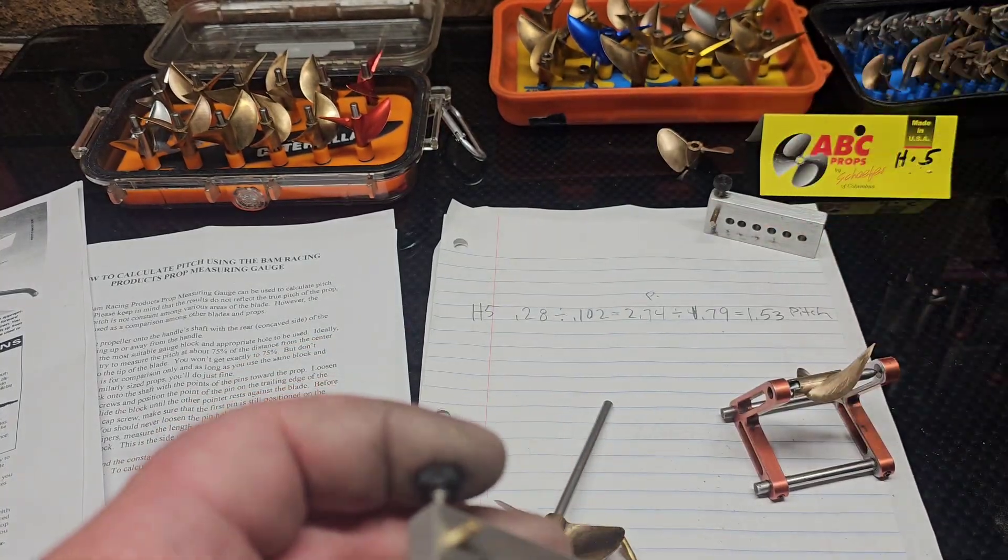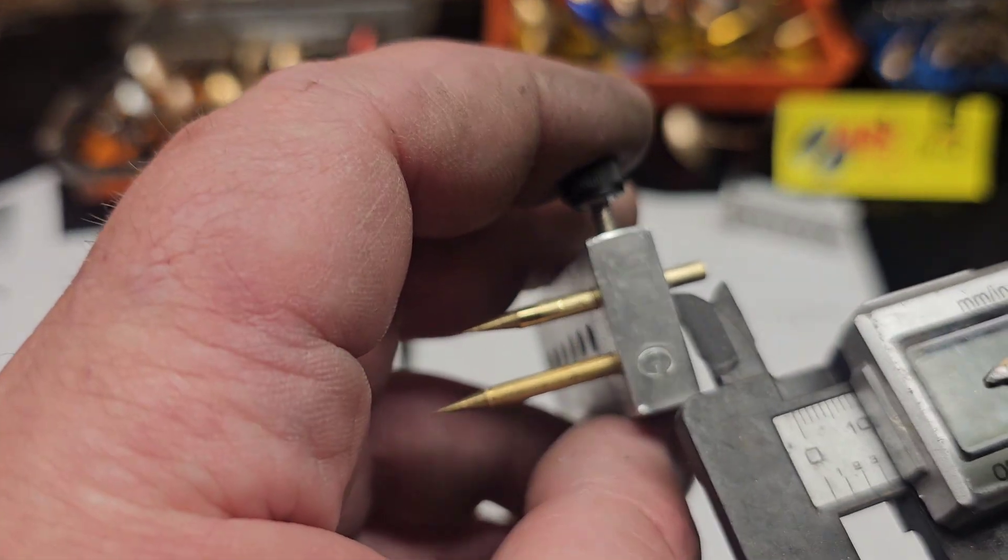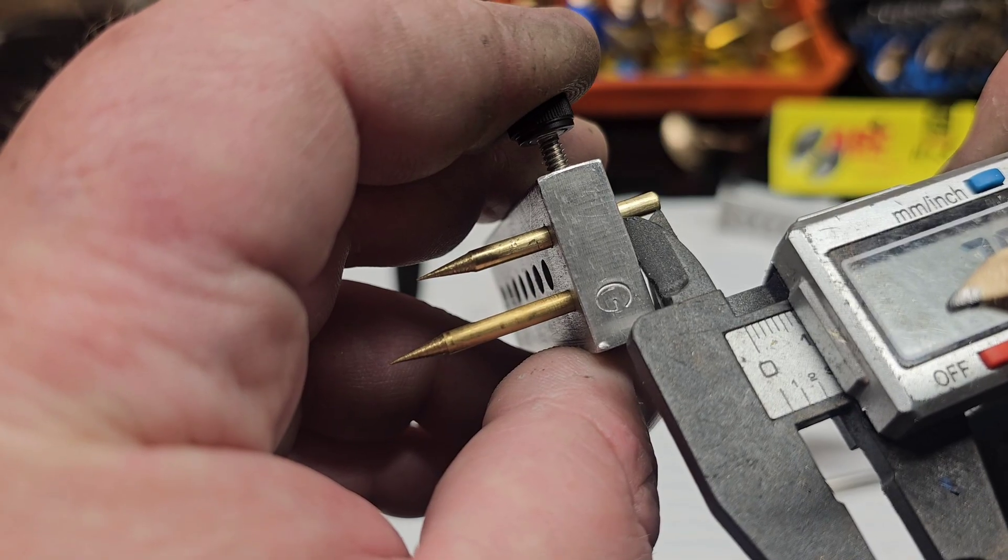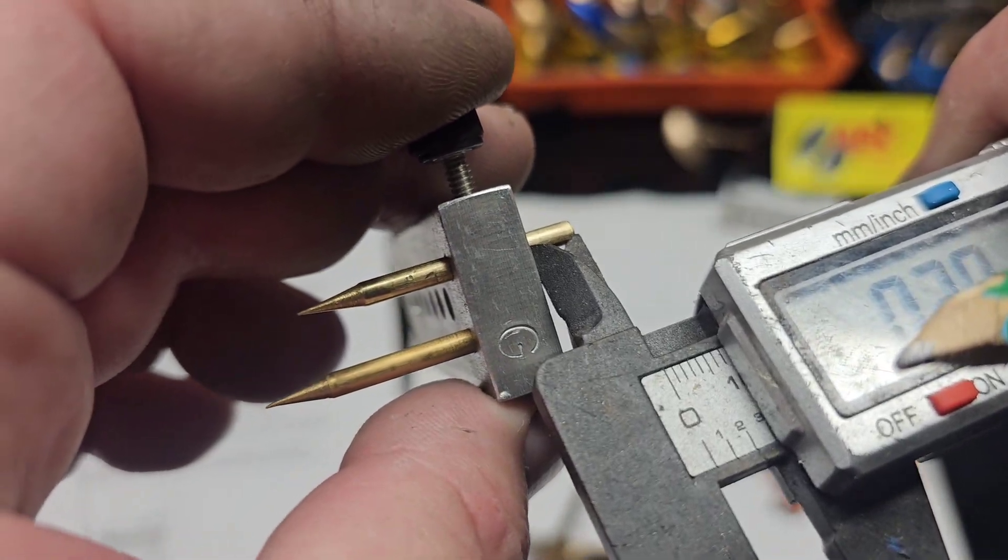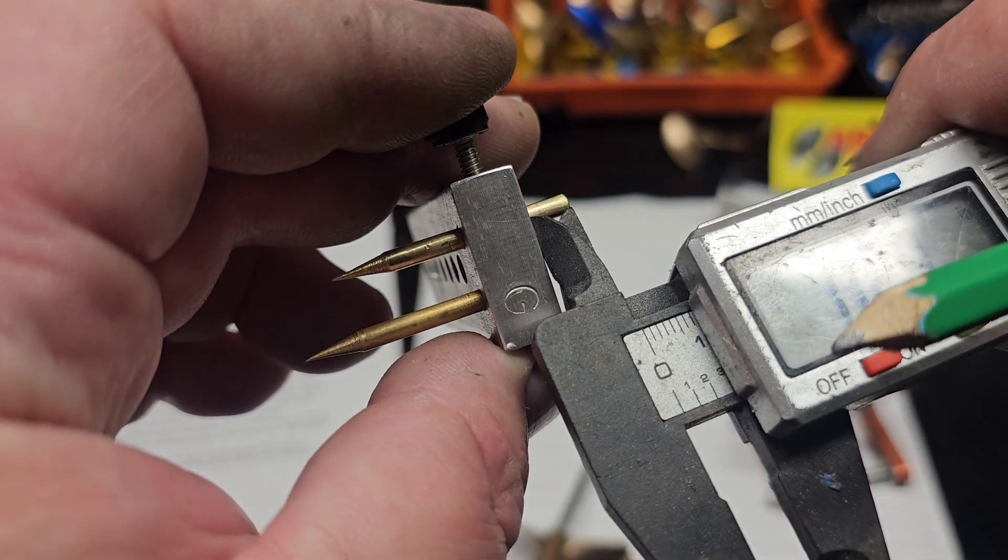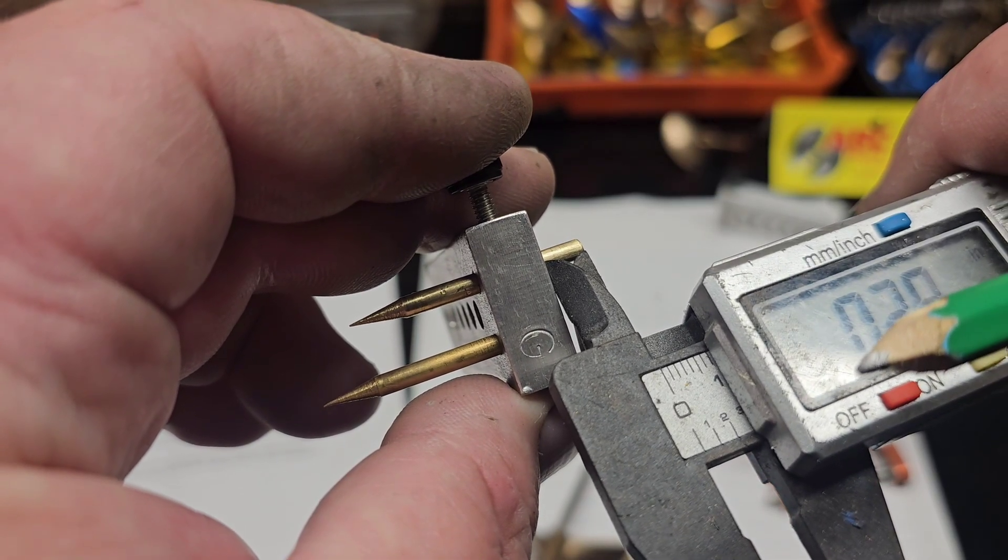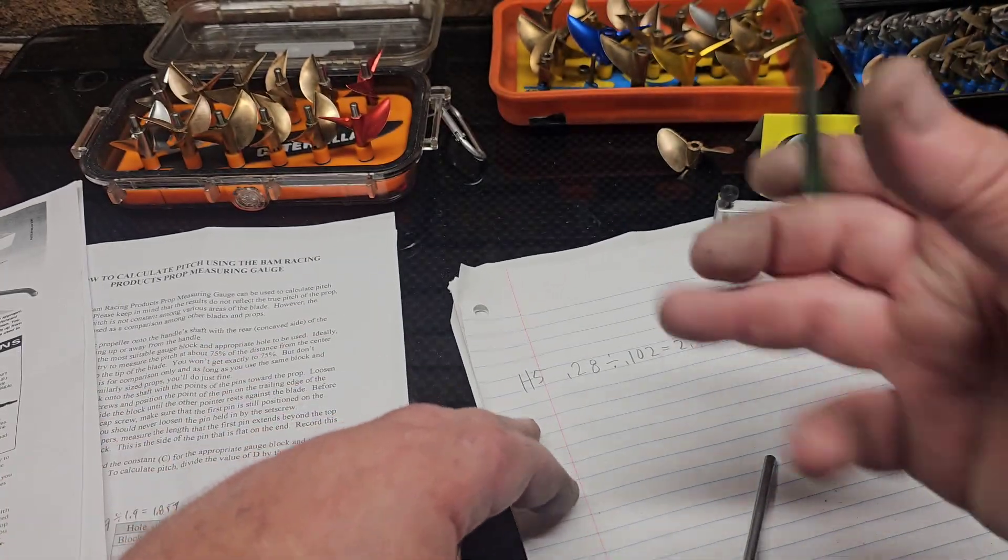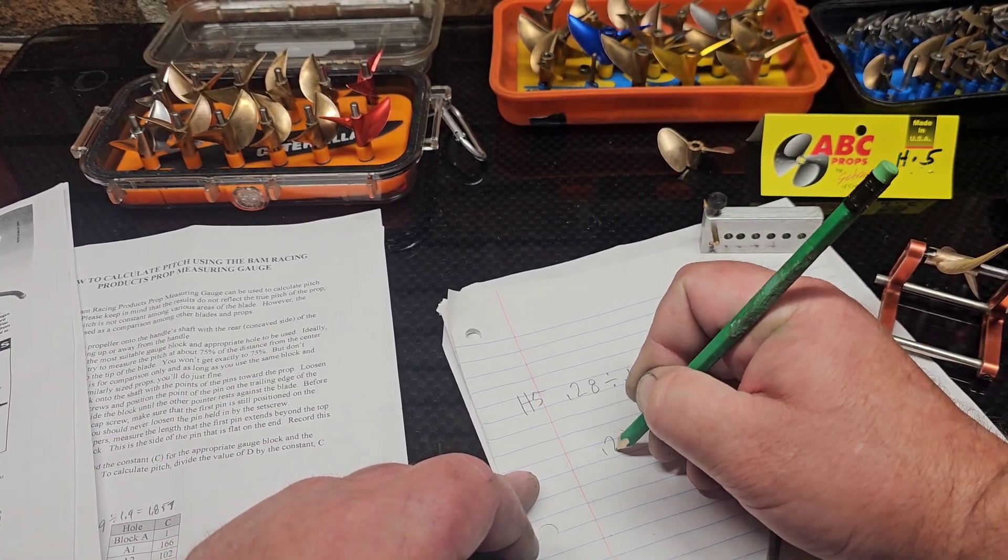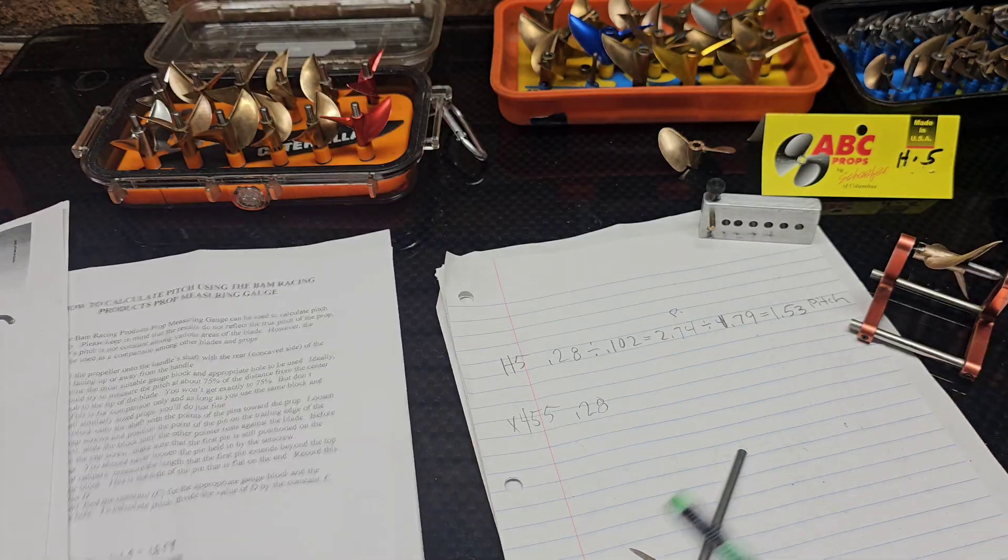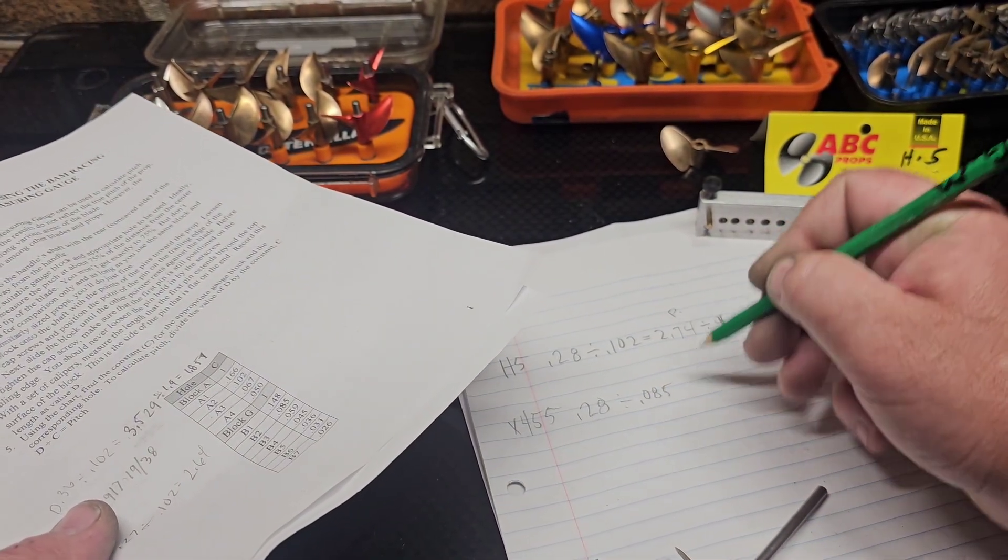So this is B block. So let's get a measurement here. I've got to get it at inches. I've got to get another caliper. 0.28. This is a X455. 0.28. We're using B block hole 2, which is 0.085 divided by 0.085 equals.